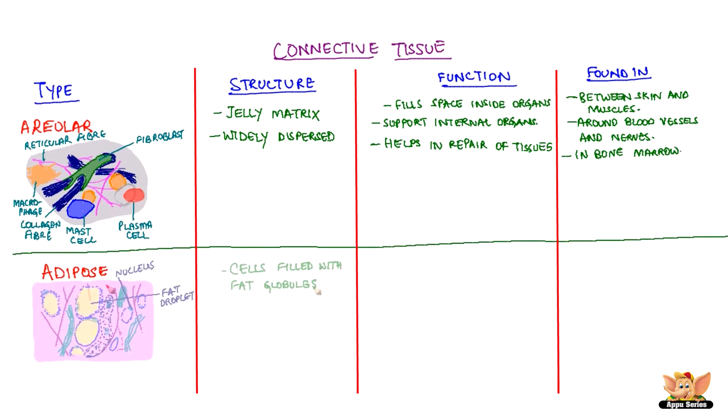Adipose tissue has cells filled with fat globules. It acts as an insulator and is found below the skin and in between internal organs.